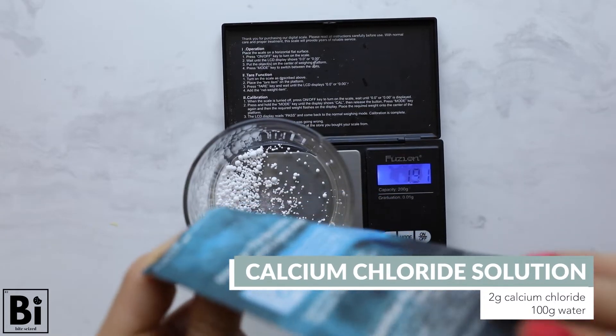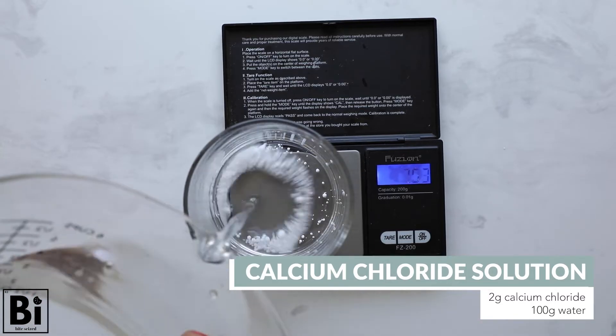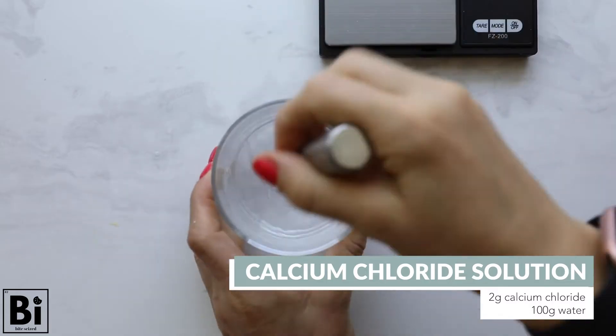In a separate bowl, create a 2% calcium chloride solution by adding 2 grams of calcium chloride to 100 grams of water. Give it a real good whisk until all the calcium chloride has dissolved.